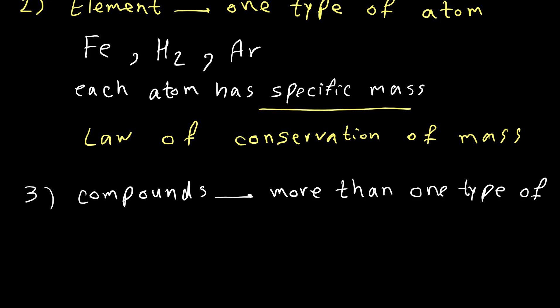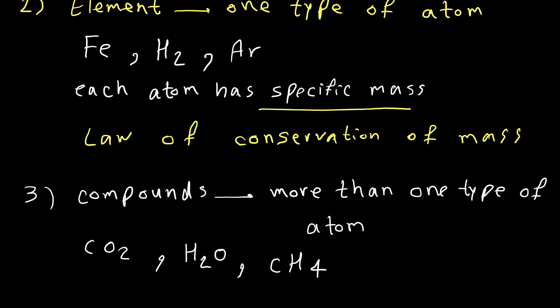The third postulate explains compounds. Compounds have more than one type of atom in their structure, so basically different types of atoms can combine with each other by a chemical bond and make a compound — like carbon dioxide, which has two different elements: carbon and oxygen. Or water, which has two different elements: hydrogen and oxygen.